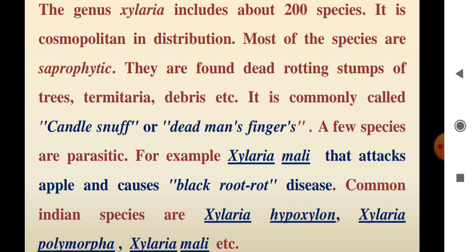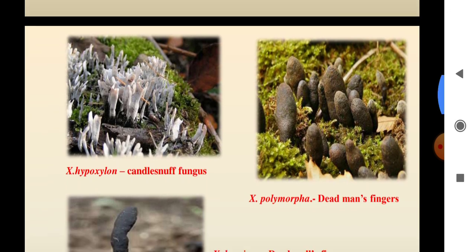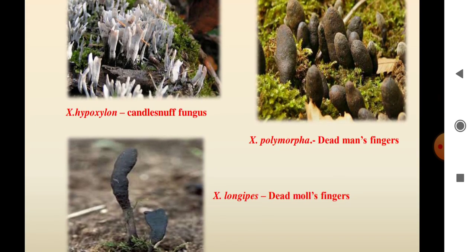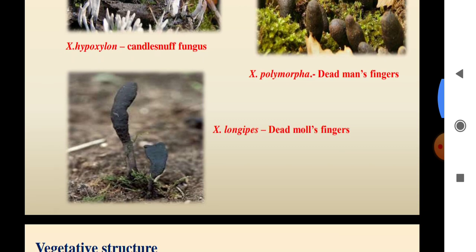This is Cydaria polymorpha. Few species are parasitic. For example, Cydaria mala attacks apple and causes a disease called Black Root Rot. The species include Cydaria hypoxylon, Cydaria polymorpha, and Cydaria mala. Cydaria hypoxylon is known as the Candlesnuff fungus. Cydaria polymorpha is known as Dead Man's Fingers.